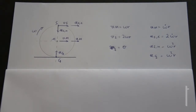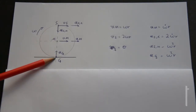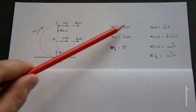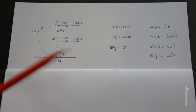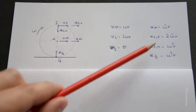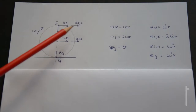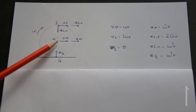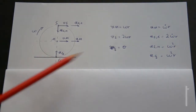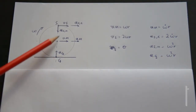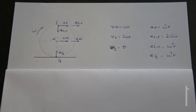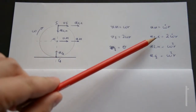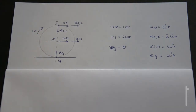In summary, for the rolling wheel, the three key points are M (center), G (contact), and S (top). The velocity of M equals omega·R; velocity of S is twice that; velocity of G is zero. The acceleration of M equals omega_dot·R; the tangential acceleration of S is twice that of M, and S also has a normal acceleration of omega²·R pointing toward the center of curvature. Importantly, G has no velocity but has a normal acceleration of omega²·R, also pointing toward M.